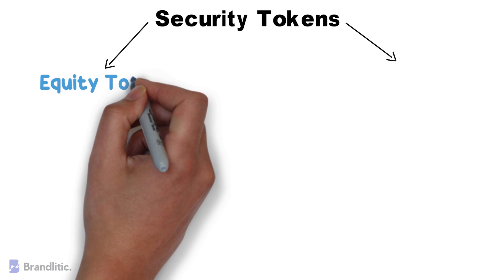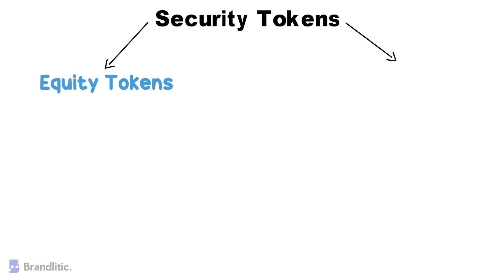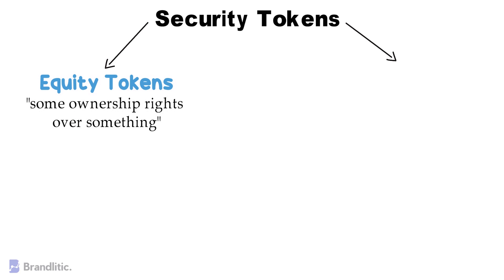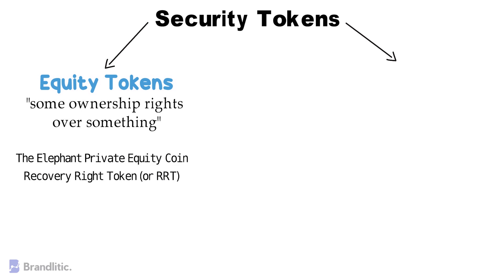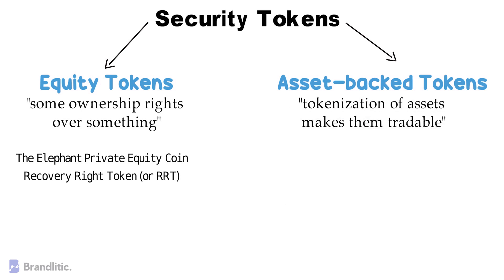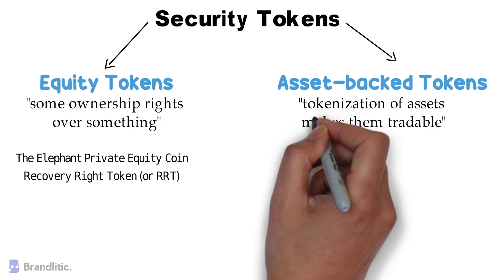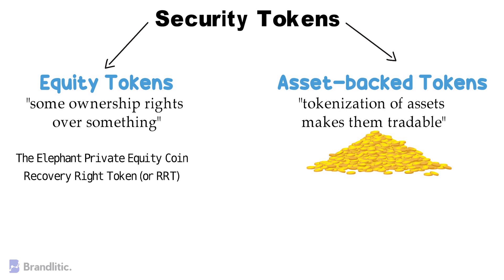First, Equity Tokens — these are types of security tokens that allow the holder to have some ownership rights over something. Some examples include the Elephant Private Equity Coin and Recovery Right Token (RRT). The second type is asset-backed tokens, where the tokenization of assets makes them more tradable — instead of trading the asset itself, you trade the token.